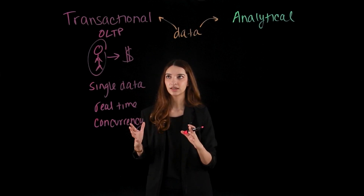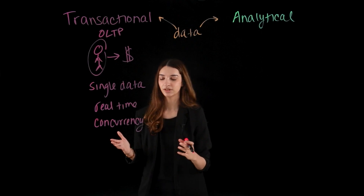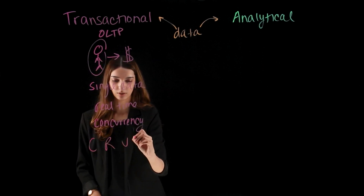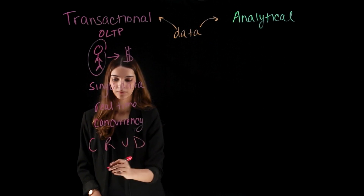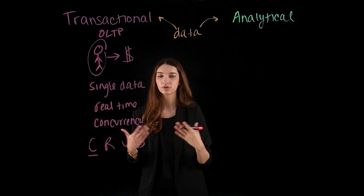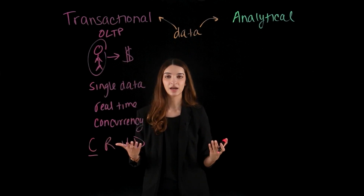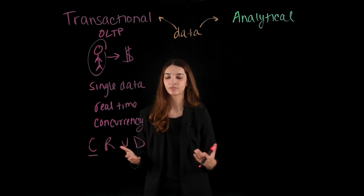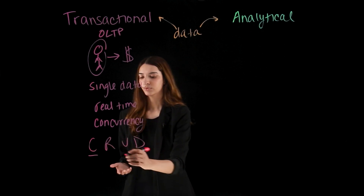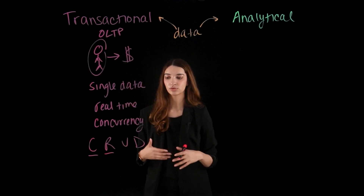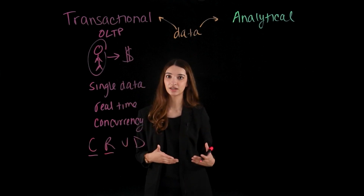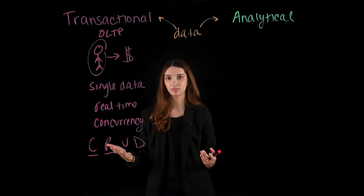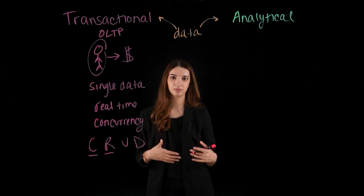A few of the operations that are supported are called CRUD operations. We have create, which is creating a record — if you're a first-time customer at a restaurant, they are creating a record of you. We also have read, which is reading information from the database and returning it back to you. For example, if you want to know your bank balance, that's being read from the database and returned back to you.